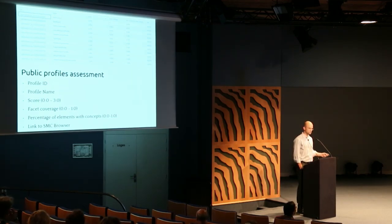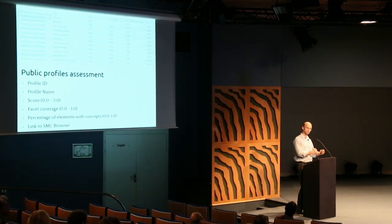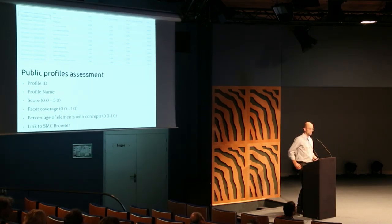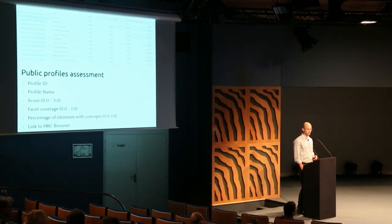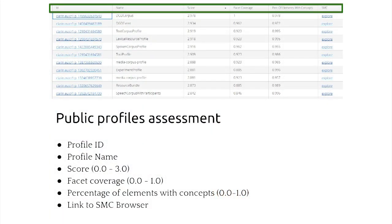A separate section covers pre-processed, pre-computed numbers for the profiles, because the quality of a record partly depends on the quality of the underlying profile. If I have bad facet coverage for a profile, I can't get any better in the instance. Therefore, we collect a few numbers for all the public profiles found in the component registry.